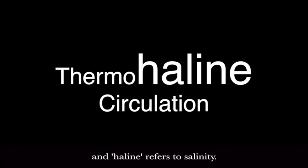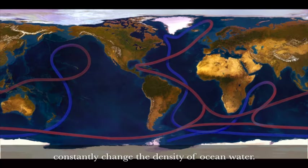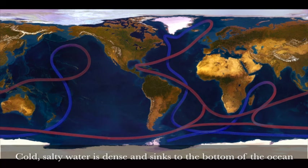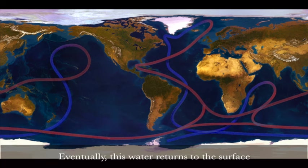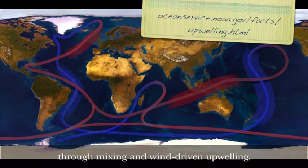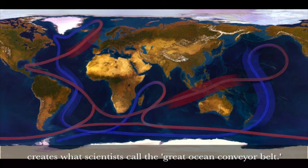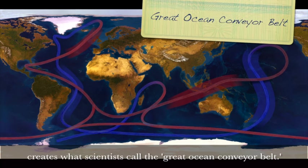It's called thermohaline circulation. Thermo means heat, and haline refers to salinity. This term describes how changes in heat and salt content constantly change the density of ocean water. Cold, salty water is dense and sinks to the bottom of the ocean, and eventually this water returns to the surface through mixing and wind-driven upwelling. On a global scale, the sinking and rising of ocean water creates what scientists call the Great Ocean Conveyor Belt.